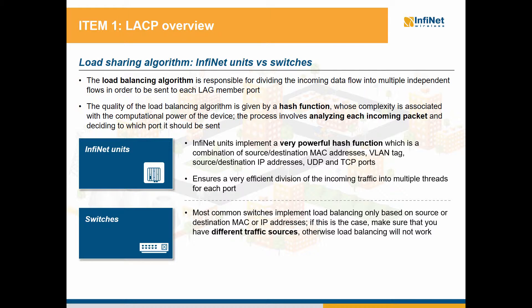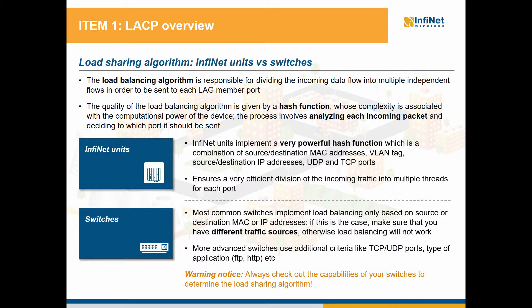Most common switches implement load balancing only based on source or destination MAC or IP addresses. For example, frames with even MAC addresses are sent to port 1 and frames with odd MAC addresses are sent to port 2. If this is the case, you have to make sure that you have different traffic sources so that the switch will be able to load balance the traffic. More advanced switches are capable to divide the traffic into different threads based on multiple criteria, including MAC addresses, IP addresses, TCP, UDP ports, type of application like FTP, HTTP, and many other criteria. As a general advice, you should check out the capabilities of your switch and determine the load sharing algorithm that it uses in order to be able to benefit of the load balancing feature.